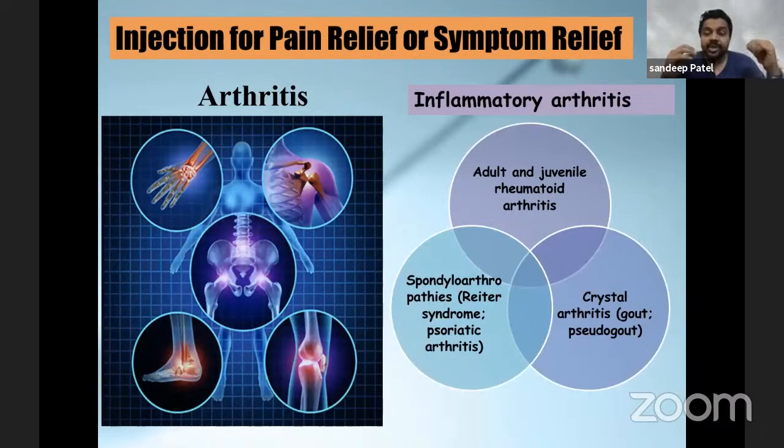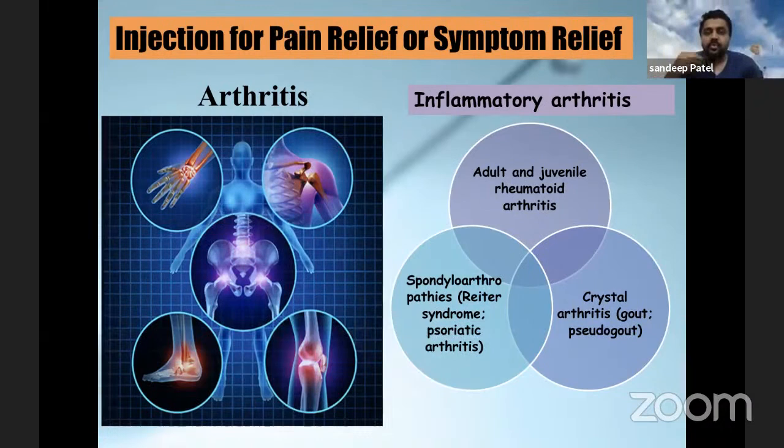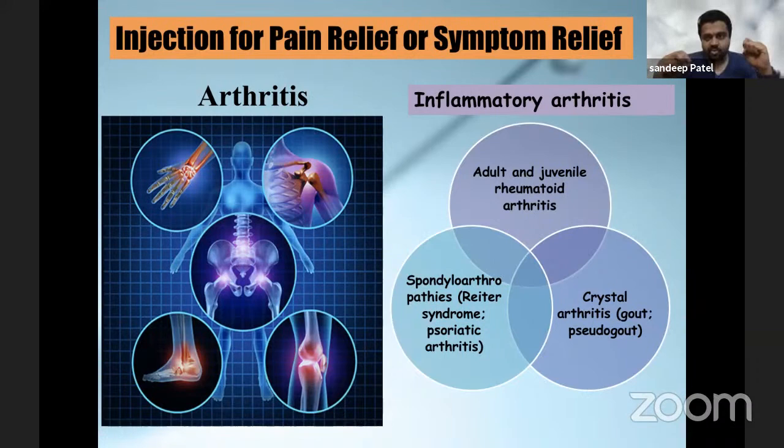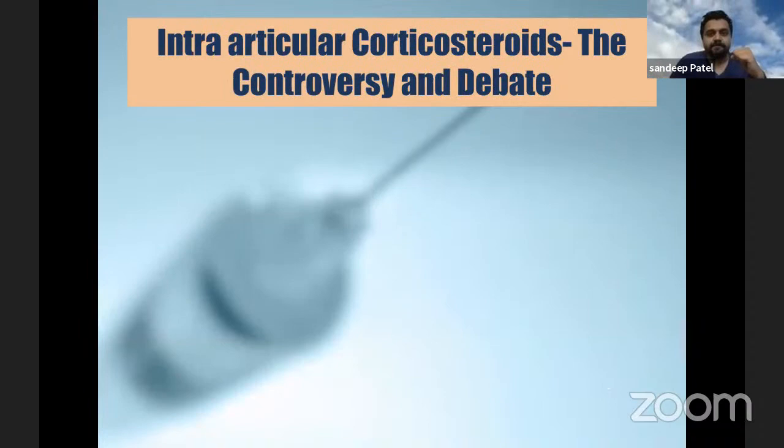Now moving to the main part - arthritis. Here the role of steroid is for the acute flares, especially in inflammatory arthritis where we know the problem is with inflammation. Be it juvenile or adult rheumatoid arthritis, the spondyloarthropathies, the crystal arthritis - for the acute flare, steroid injection does wonders. Now coming to the next important topic - osteoarthritis knee. Here starts the controversy.